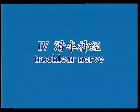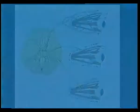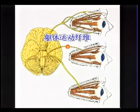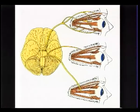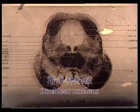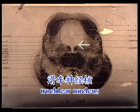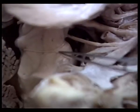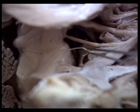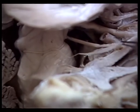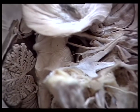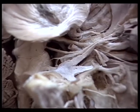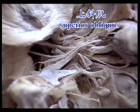四，滑车神经。滑车神经为运动性神经，含躯体运动性纤维，起于滑车神经核，由中脑下丘下方出脑，绕大脑脚外侧前行，经眶上裂入眶，支配上斜肌。